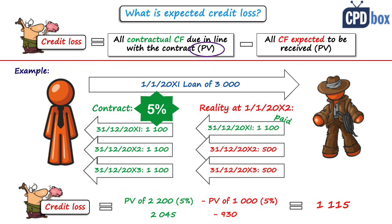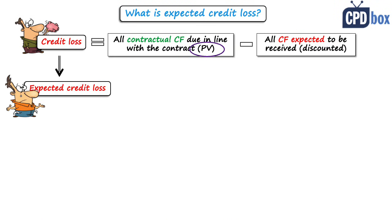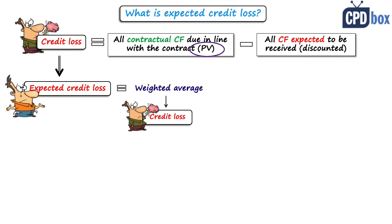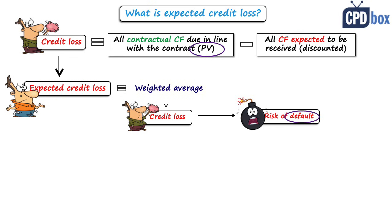If this is a credit loss, what is expected credit loss? It is the weighted average of credit losses with the respective risks of defaults as weights. Default is simply the risk of not paying an obligation by the debtor, and it can be expressed as a probability of default — some percentage. This is the IFRS 9 definition: a probability-weighted outcome.